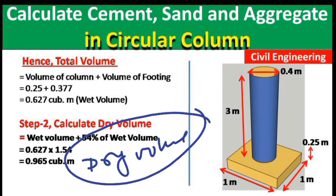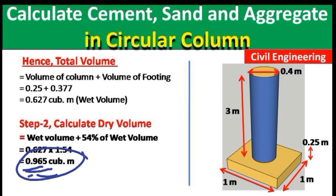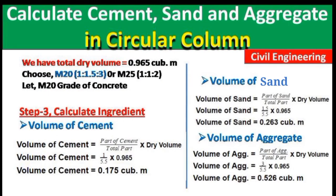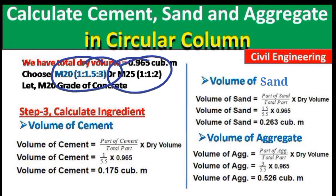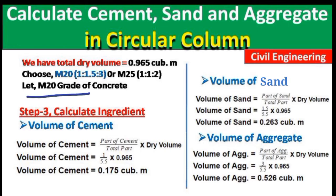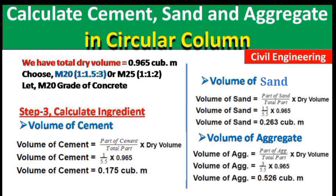The volumes of cement, sand, and aggregate depend on the grade of concrete used. You can choose M15, M20, or M25. Here I am using M20 grade, which has a mix ratio of 1:1.5:3 — one part cement, 1.5 parts sand, and 3 parts aggregate. For M25 the ratio is 1:1:2.